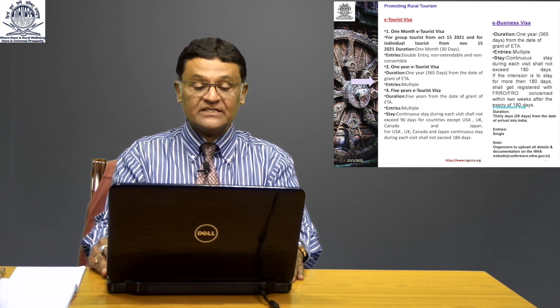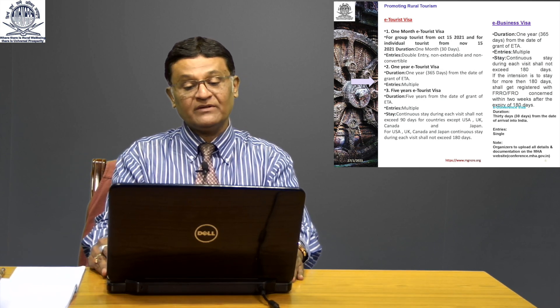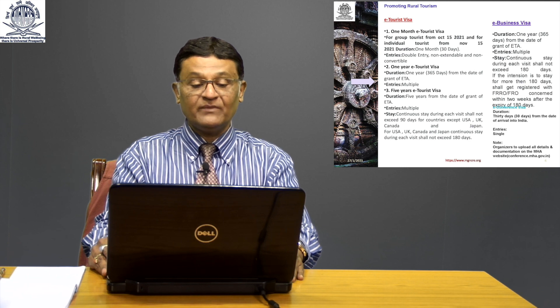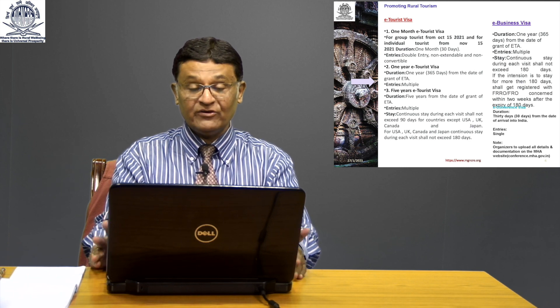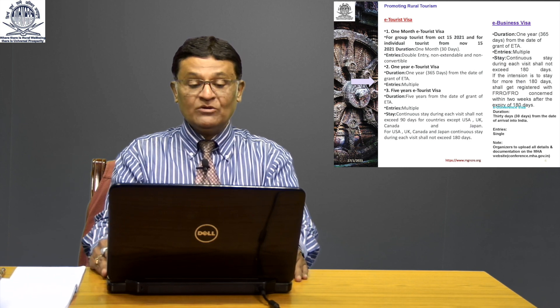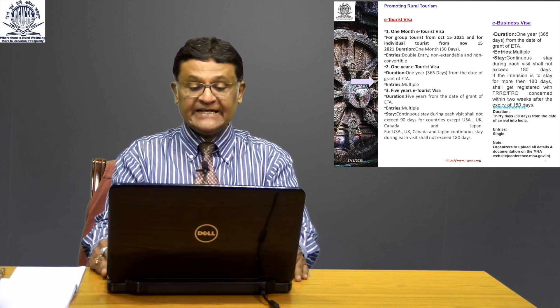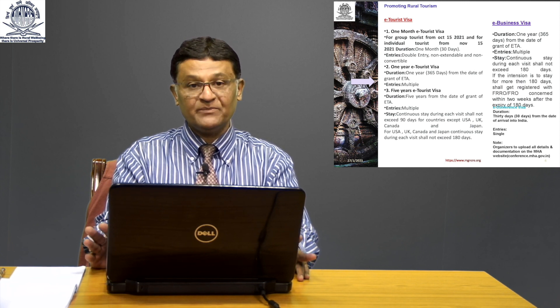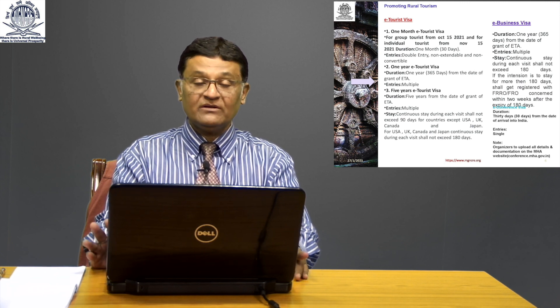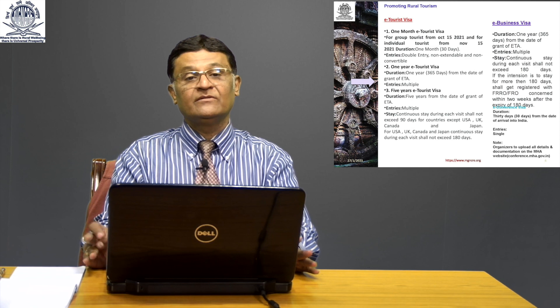The five years E-Tourist visa allows multiple entries from the date of grant. Continuous stay during each visit shall not exceed 90 days for countries except USA, UK, Canada and Japan. For USA, UK, Canada and Japan it is 180 days.